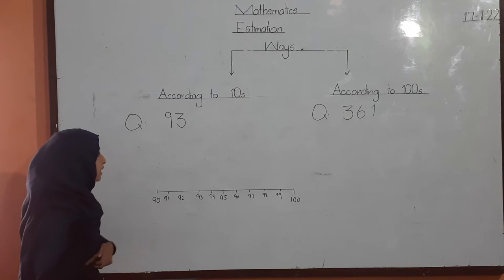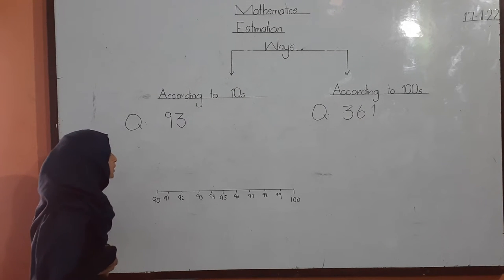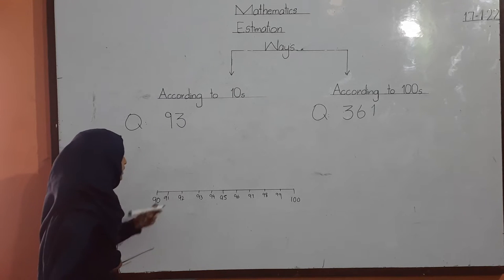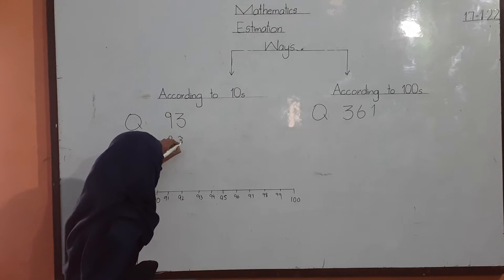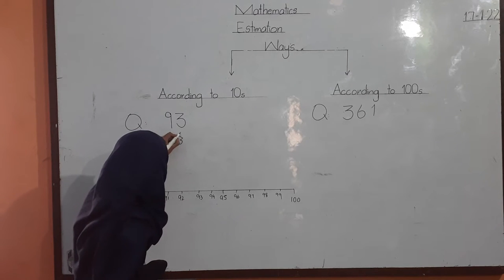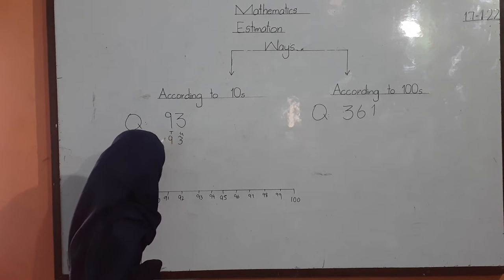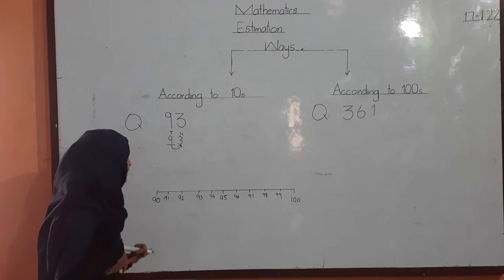There are five steps of estimation. Number one: question write. Number three: place value write. Number four: underline. Number five: arrow lagana.